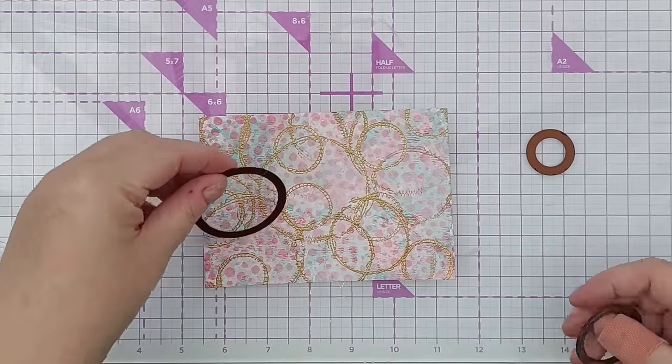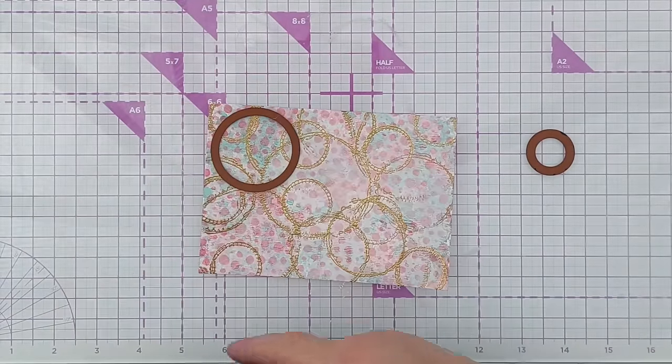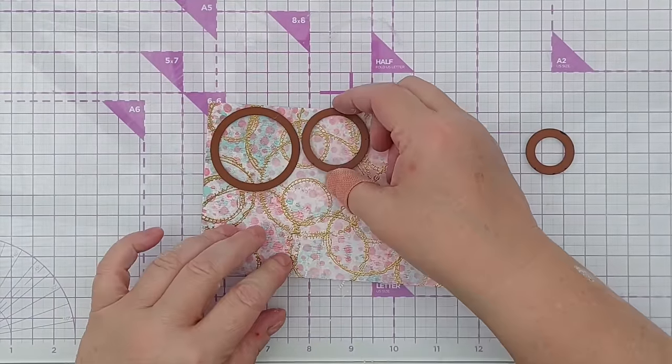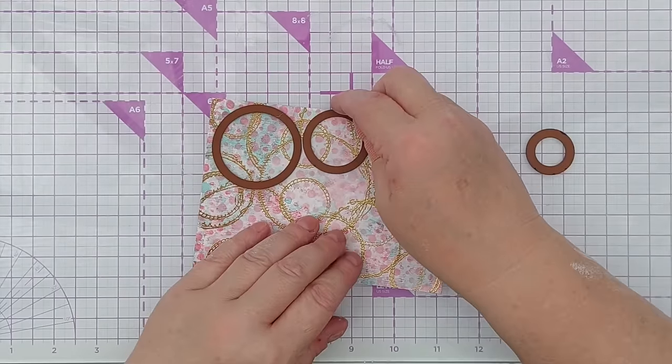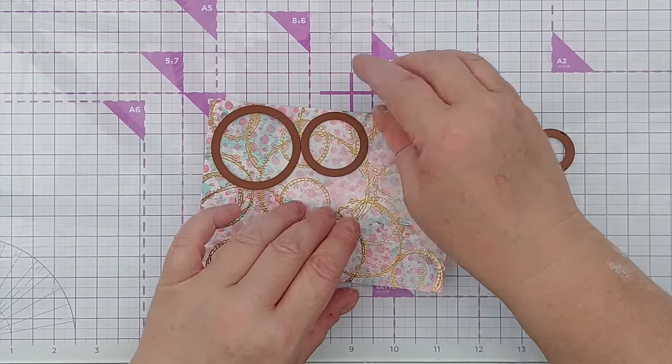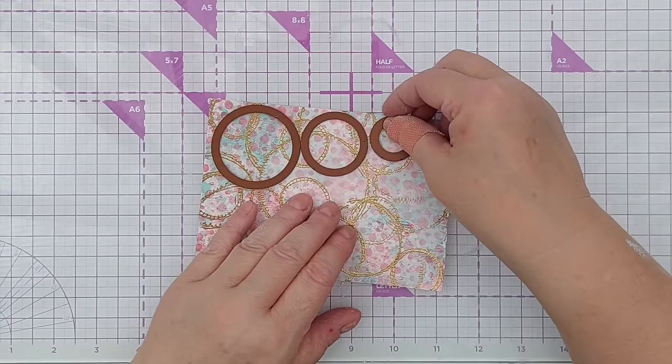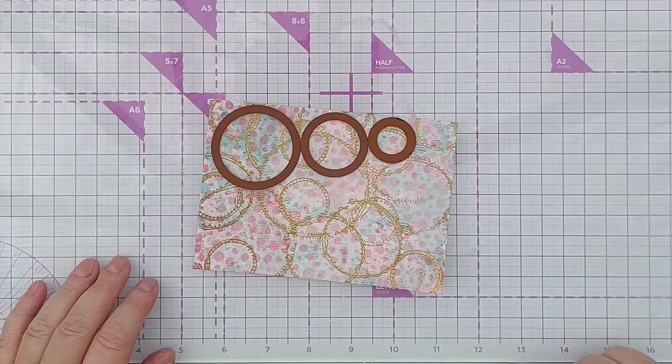What I'm going to do now is cut out lots of circles. Using these three plain circle dies. They've not got any stitching or anything on. So I'll cut out as many as I can from this.